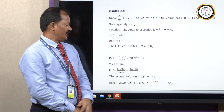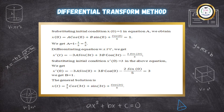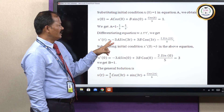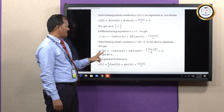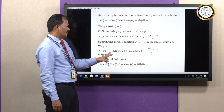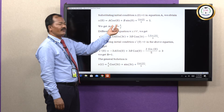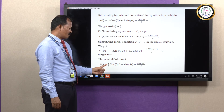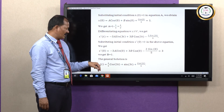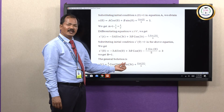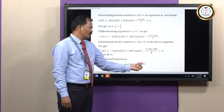Applying the initial conditions to find a and b: substituting x of 0 equals 1 gives a equals 4 over 5. Differentiating the general solution to get x-prime of t and substituting x-prime of 0 equals 3 gives b equals 1. Using sin 0 equals 0 and cos 0 equals 1, we confirm a equals 4 over 5 and b equals 1. Therefore the exact general solution is x of t equals 4 over 5 cos 3t plus sin 3t plus cos 2t upon 5.